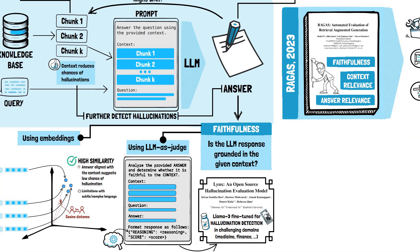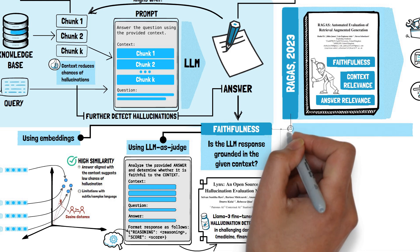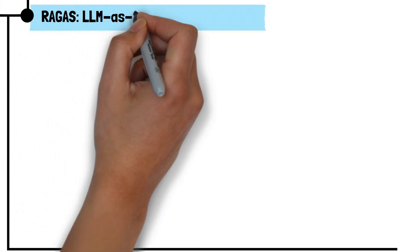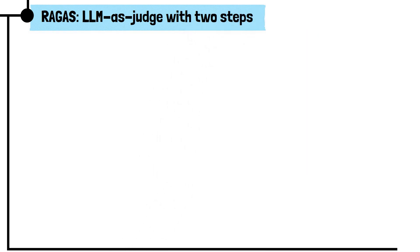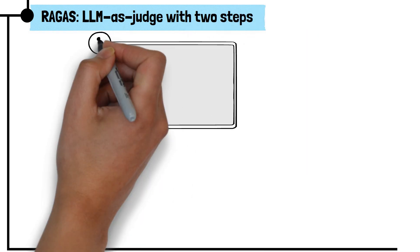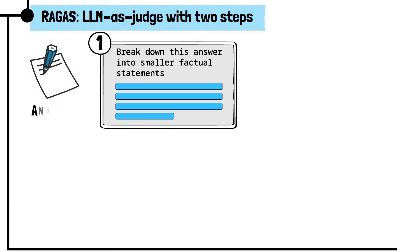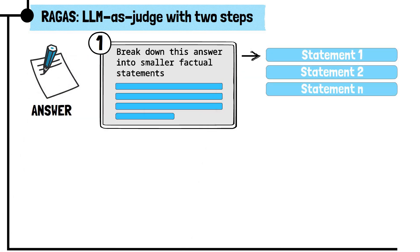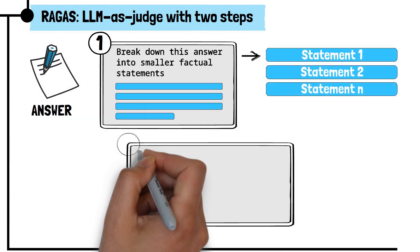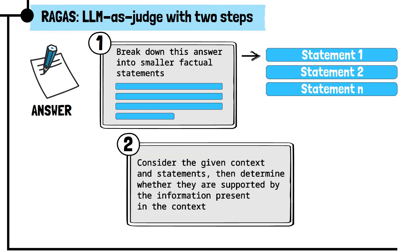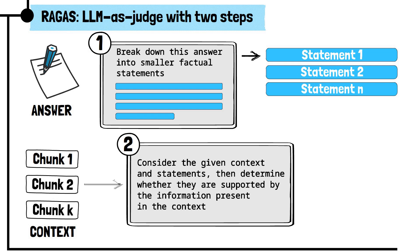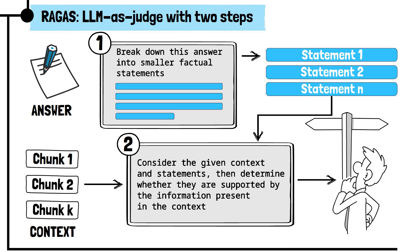In RAGAS, faithfulness checks use a similar LLM-as-judge approach, but with two steps. First, the LLM is prompted to break down the answer into smaller factual statements. Then, the LLM is asked to verify each statement against the provided context. This two-step method provides a more detailed evaluation of whether the answer is grounded in the context, giving us a clearer view of its faithfulness.